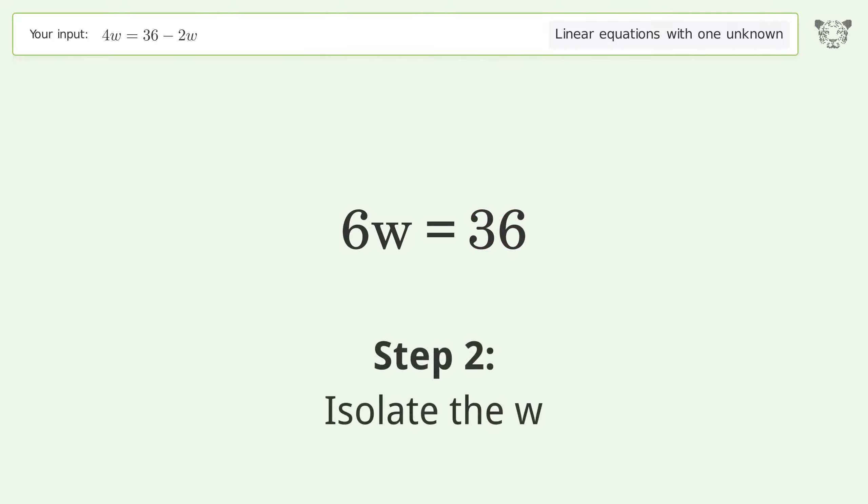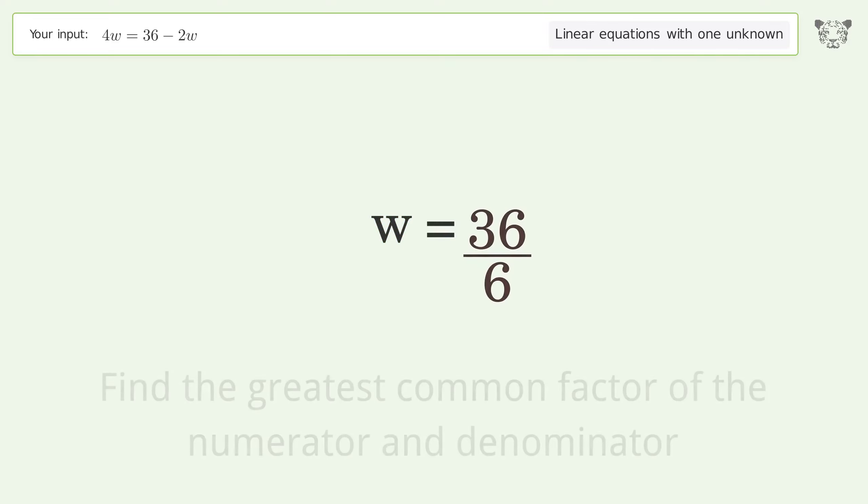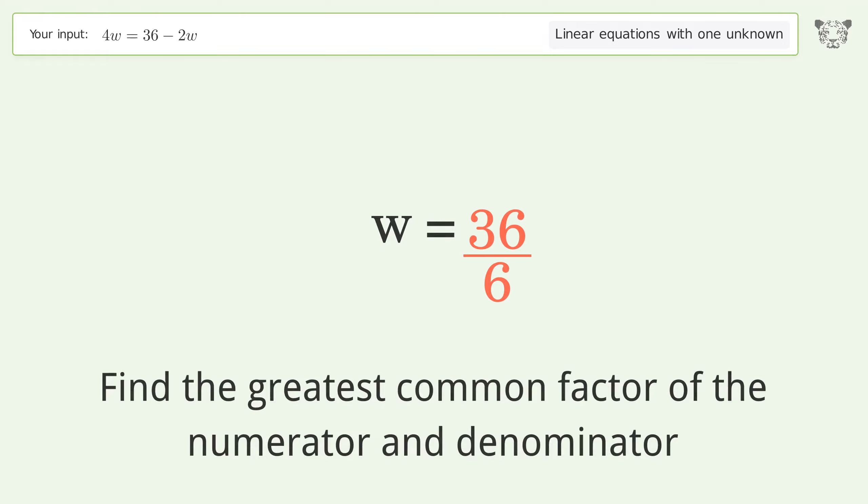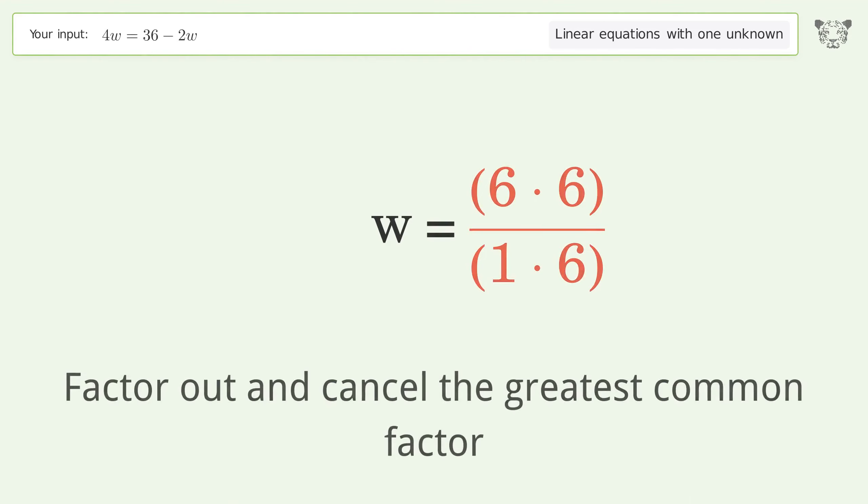Isolate the w. Divide both sides by 6. Simplify the fraction. Find the greatest common factor of the numerator and denominator. Factor out and cancel the greatest common factor.